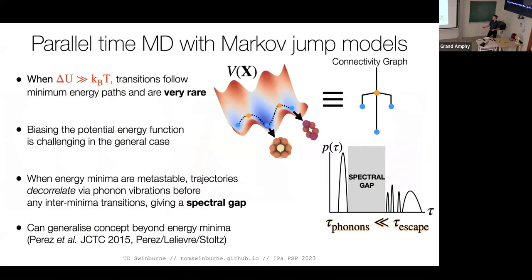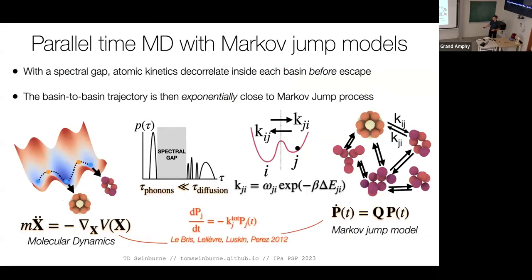When I have nice deep metastable energy minima, I have these rare events, which means the dynamics are very slow but also theoretically quite simple. When I have this spectral gap — very deep minima — the phonon timescales and all other timescales are well separated. The dynamics become decorrelated inside the basins and have this simple exponential escape law. Using the QSD framework, I have a rigorous map between molecular dynamics and a Markov jump model. I can directly estimate rates using a rate law for the full Markov jump model.